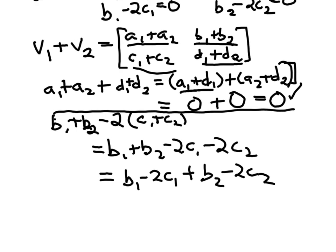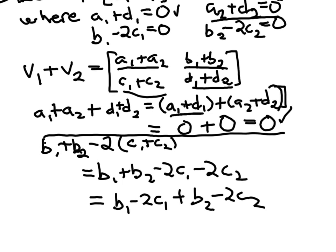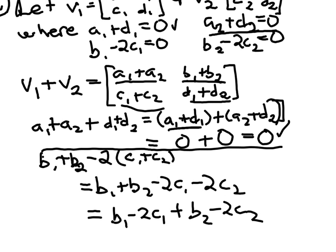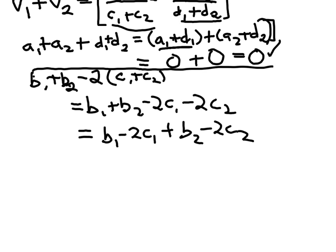And look back up at our setup here. So since V1 belongs in W, B1 minus 2C1 must be 0. And same thing for our V2 here. And that's what we have as the parts of our sum right here. This has to be 0 if V1 is in W, and this has to be 0 if V2 is in W. So yes, the sum is 0. And so we've shown now that W is closed under addition.